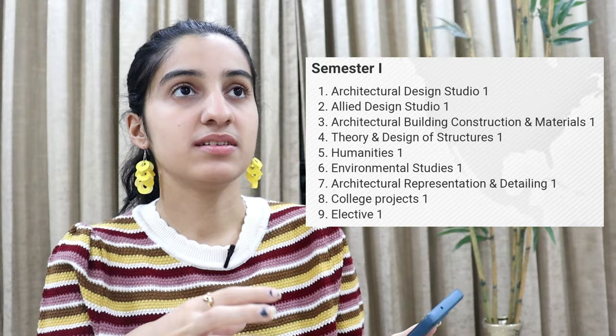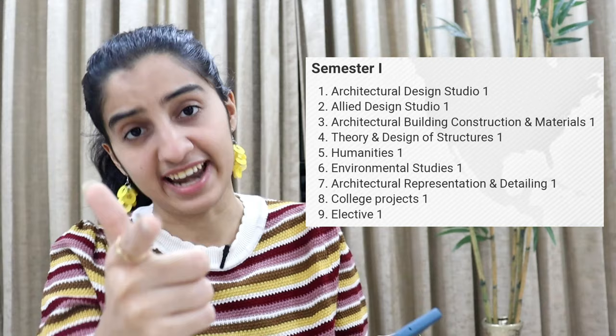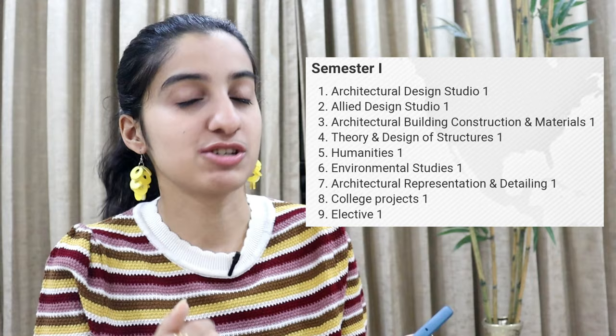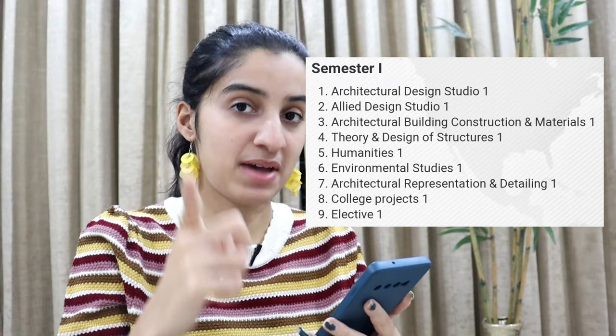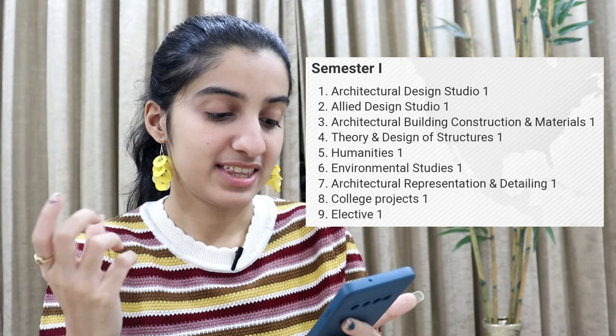The Allied Design Studio in first year was called Basic Design — you learn about color theory, make models, do shadow studies. It's a really fun class covering a wide range of foundational concepts. Building Construction and Materials covers bricks mainly in first year. Theory of Design and Structures is the maths subject — I was okay in first year but it got harder after that. Humanities is basically History, and Environmental Studies was like school EVS but at college level.